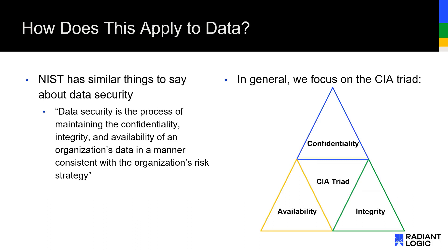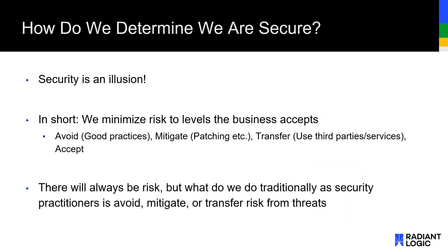NIST has pretty similar things to say, which is to be expected. Data security, and indeed security in general, focuses on the CIA triad. The CIA triad is based around confidentiality — making sure that information is kept private — integrity — making sure that information hasn't been tampered with — and availability — making sure that information can be accessed appropriately.